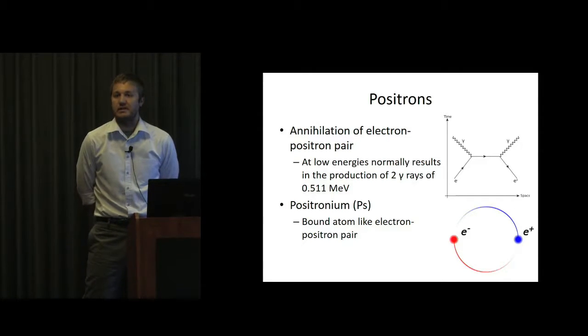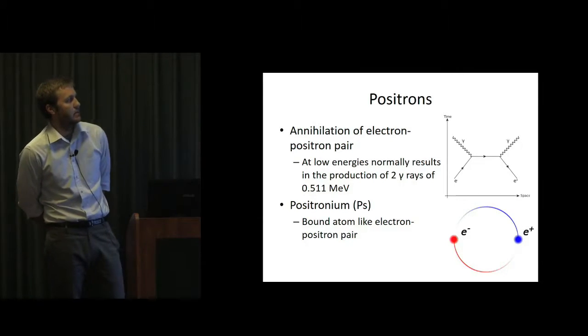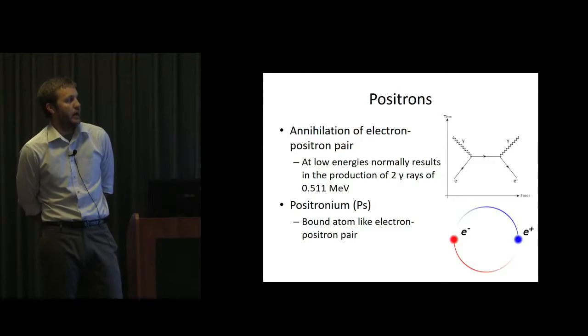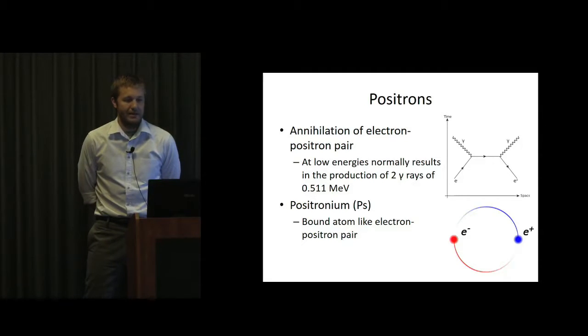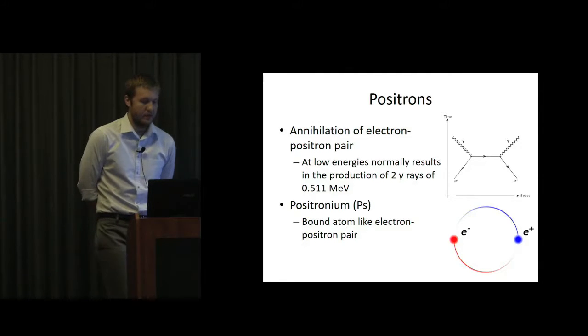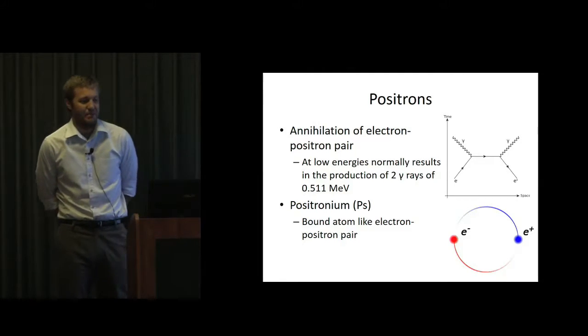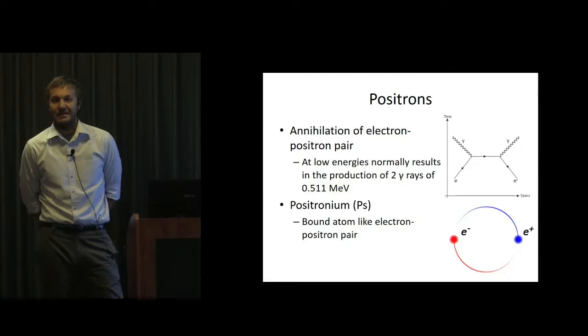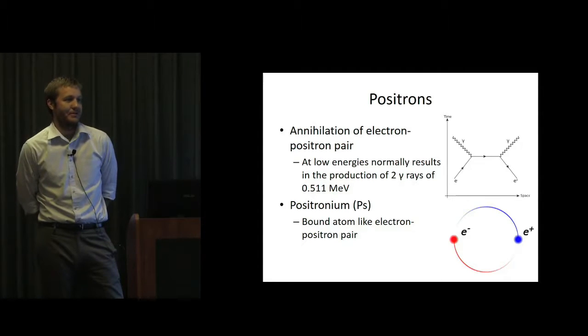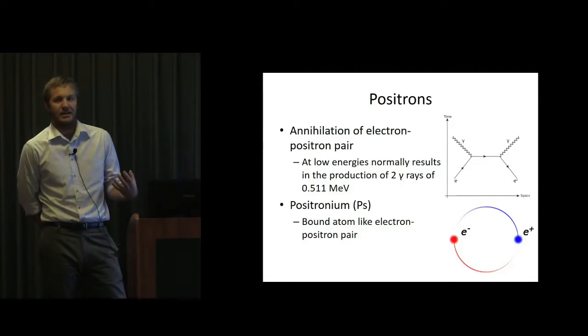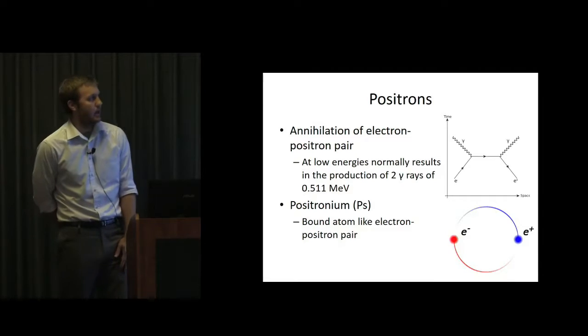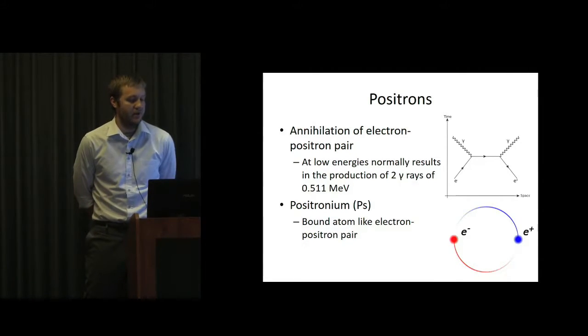The other concept we need is this idea of positronium. And so it's a bound atom-like electron-positron pair. It's metastable, so it will eventually annihilate. And you can kind of think of it like a hydrogen atom with the proton being replaced by positron. That might not be the best analogy because the electron-positron masses are the same versus the proton, of course, weighing like 1,800 times more than the electron. But it's a metastable hydrogen kind of like atom in a way. And you see this experimentally and theoretically in various systems.